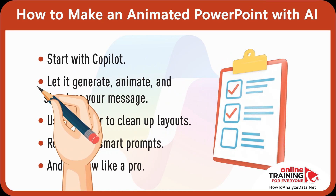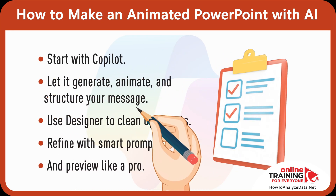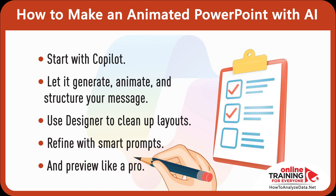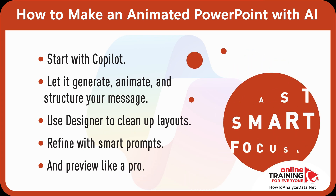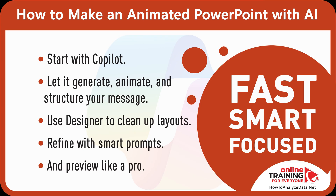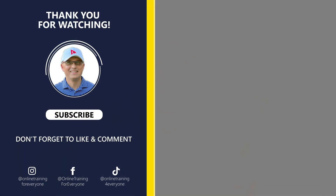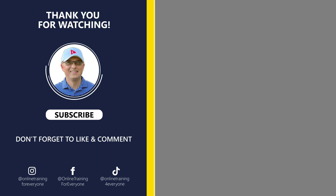Here's the quick workflow recap: start with Copilot, let it generate, animate, and structure your message. Use Microsoft Designer to clean up layouts. Refine with smart prompts, and preview like a pro. And this is how you build a standout animated PowerPoint — fast, smart, focused, and with AI. Well, that's it for now. If you learned something new, hit the like button and subscribe to Online Training for Everyone. Have a wonderful day — I'll see you next time.